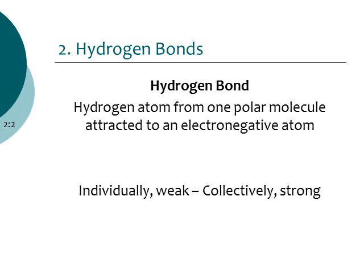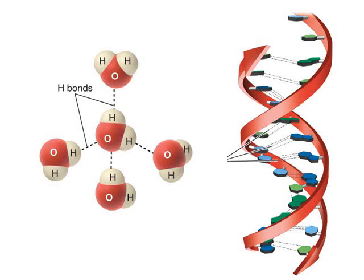The second type of bond is hydrogen bonding. Hydrogen bonds occur between polar molecules — specifically between polar covalent molecules. Individually, hydrogen bonds are very weak and easy to break, but if you have lots of them they are actually very strong. We see hydrogen bonds between water molecules, because water's polar covalent bond causes the oxygen to be a little bit negative and the two hydrogens to be a little bit positive.